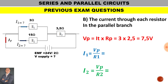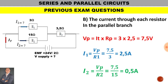Using Ohm's law, I equals V over R, we divide the parallel voltage by R1 and R2 respectively. For I1: 7.5 divided by 3, and for I2: 7.5 divided by 15. Adding I1 and I2 together should give the total current of 3 amps, confirming our answers are correct.